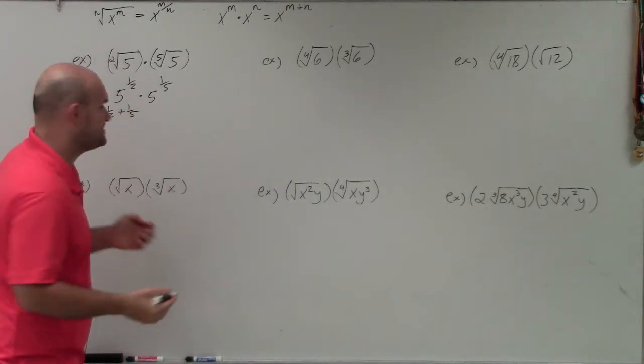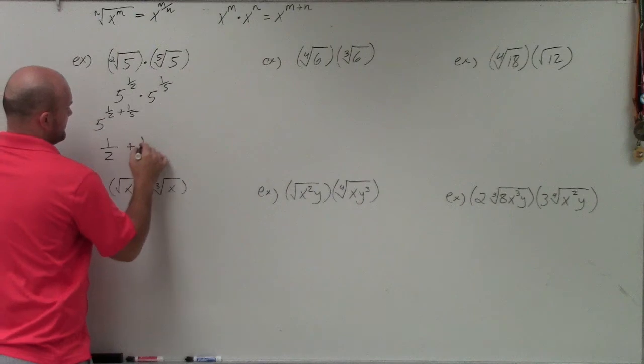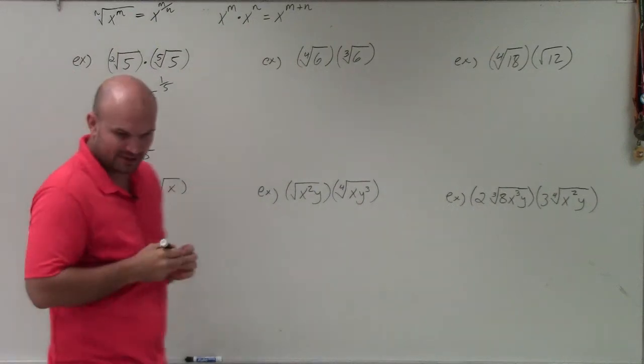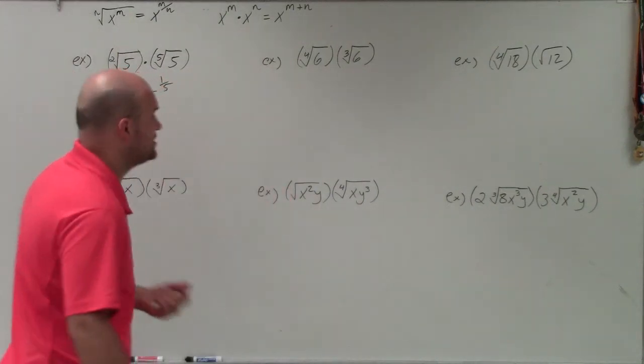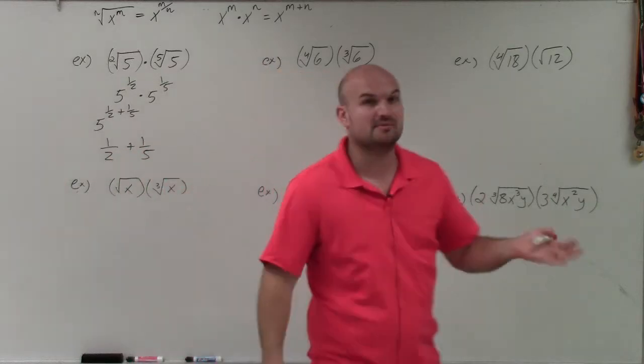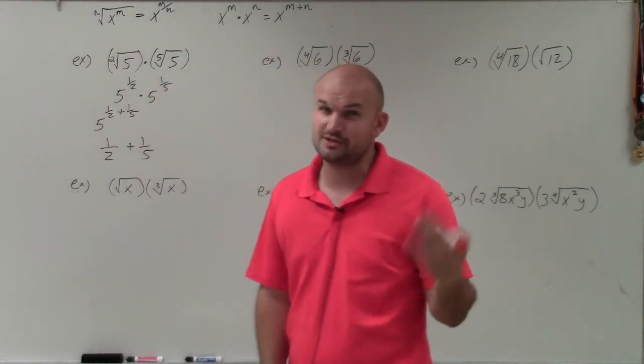Now obviously, to obtain this, we have to get common denominators. So just a kind of quick little review over here. To get common denominators, we need to find the smallest number that 5 and 2 both evenly divide into, which would be 10.